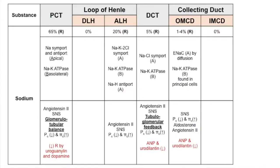The majority of sodium is reabsorbed in the proximal convoluted tubule through secondary active transport on the apical side, except for the ENaC — epithelial sodium channels — in the outer medullary collecting duct, which operates by diffusion.